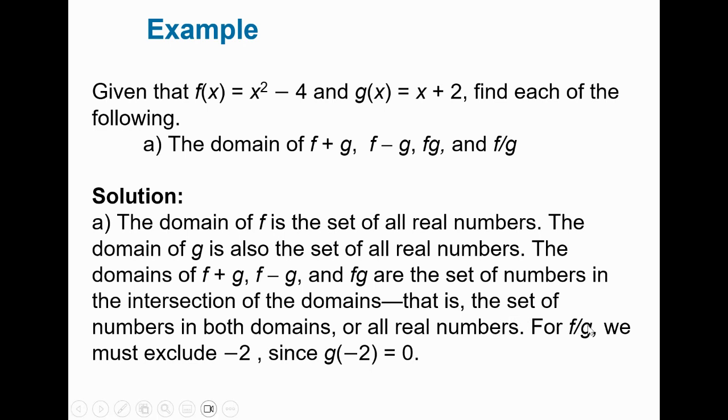Now, f divided by g says we must exclude negative 2. If I'm taking this function and dividing it by this function, this is in my denominator. And if I replace x with negative 2, the denominator here becomes 0, and that would leave you something that's undefined. So negative 2 is not in the domain of f divided by g because substituting in negative 2 in the g function leads to 0. And if you've got a quotient here, you can't have a denominator whose value is 0.